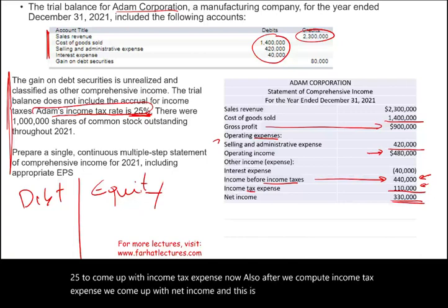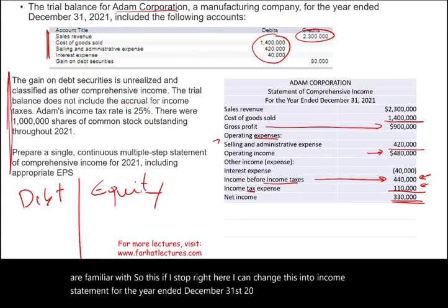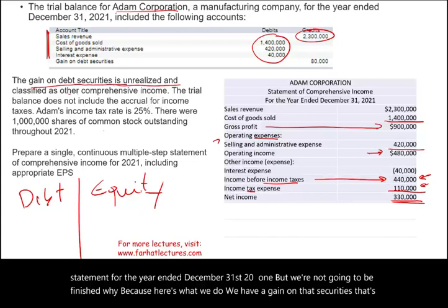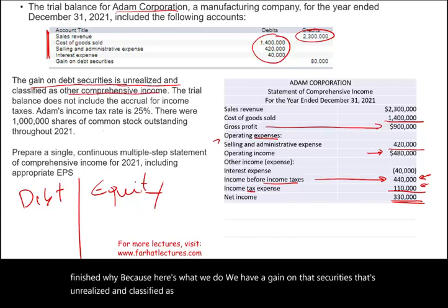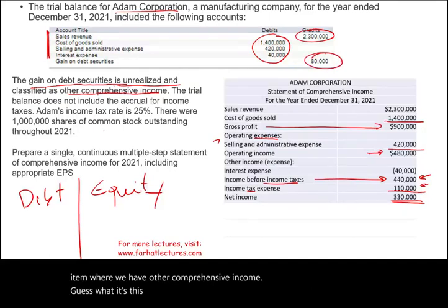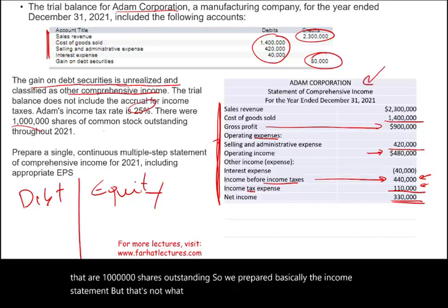After computing income tax expense, we arrive at net income of $330,000. If we stopped here, this would be a standard income statement for the year ended December 31, 20X1. However, we have a gain on debt securities that is unrealized and classified as other comprehensive income — that's the $80,000 gain. Adam's income tax rate is 25% and there are 1 million shares outstanding.